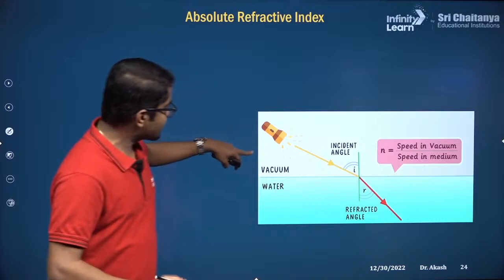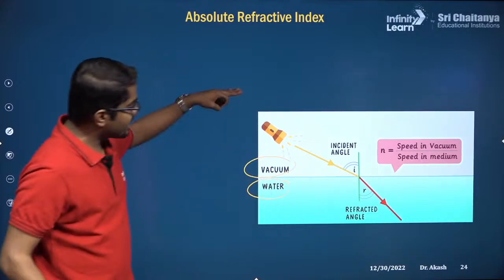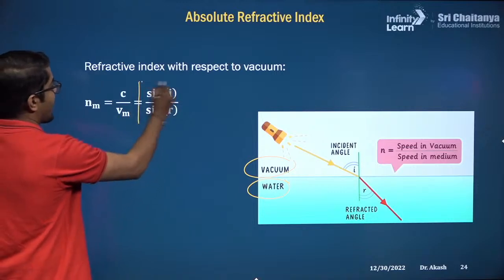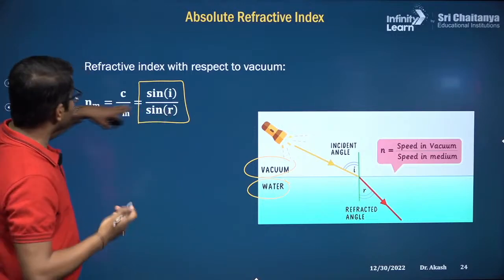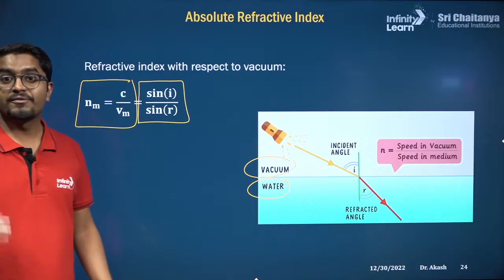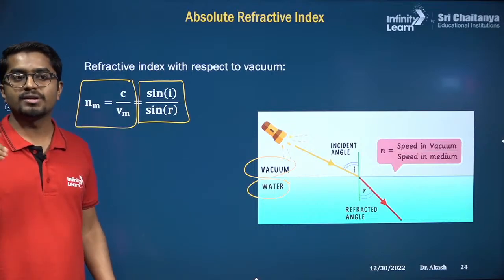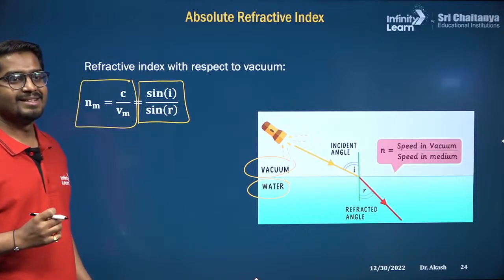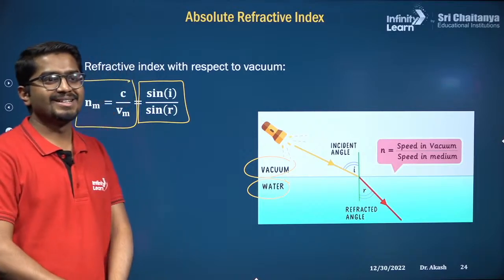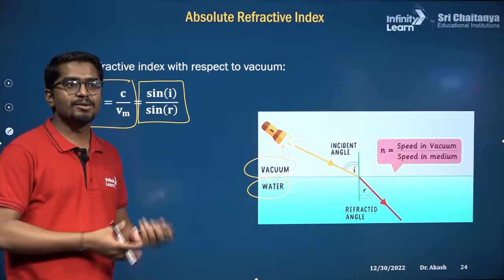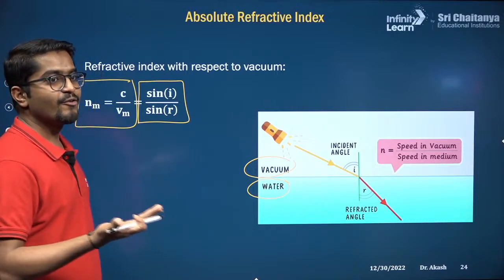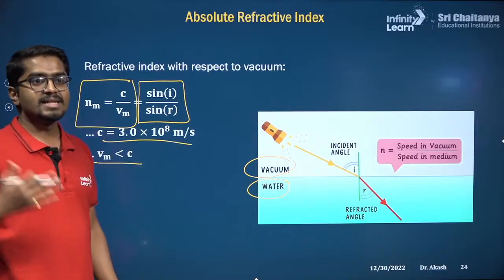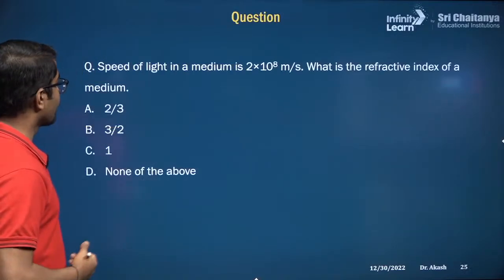When light travels from vacuum to some medium, the speed changes. The ratio sin I / sin R — given by Snell's Law — can be equated to the refractive index formula N = C/V. This is called the absolute refractive index. Nothing can travel faster than the speed of light — this was proven by Einstein. Any object or even shadows cannot exceed the speed of light.